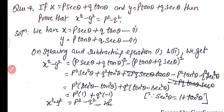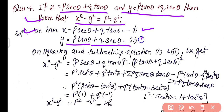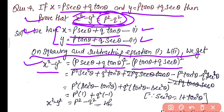Question 4: If x equals p·sec θ plus q·tan θ and y equals p·tan θ plus q·sec θ, prove that x² minus y² equals p² minus q². Squaring and subtracting equation 1 and equation 2, on the left-hand side we get x² minus y², and on the right-hand side we get (p·sec θ plus q·tan θ)² minus (p·tan θ plus q·sec θ)².